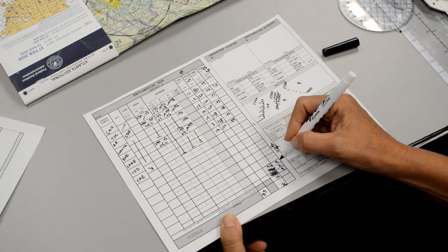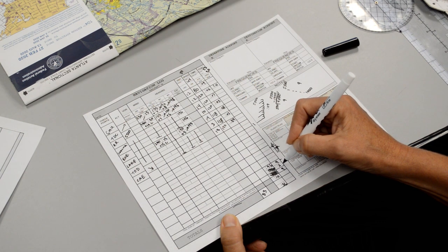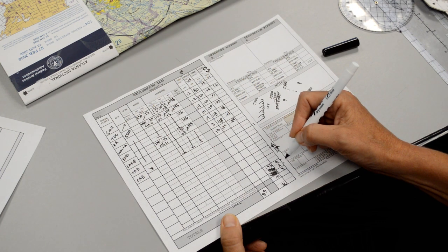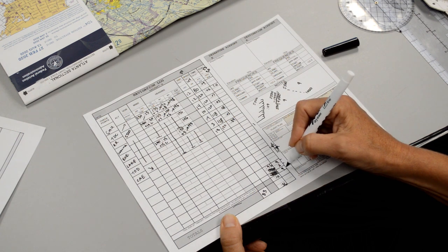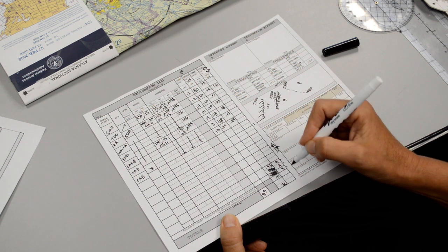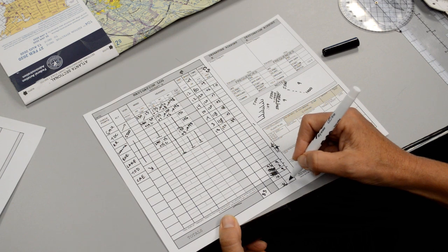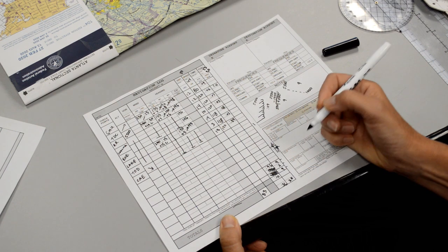So we have nine gallons for the flight, two gallons for the engine start, taxi and run up, and then we have nine gallons for our reserve fuel. So we need a minimum of 20 gallons to make this flight.